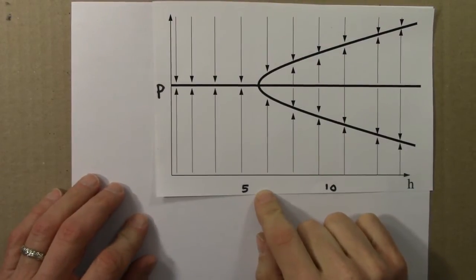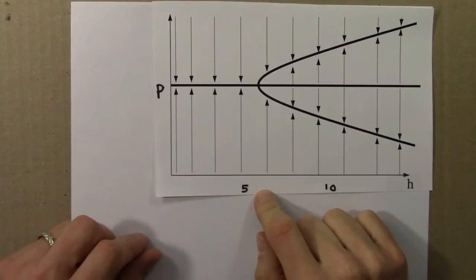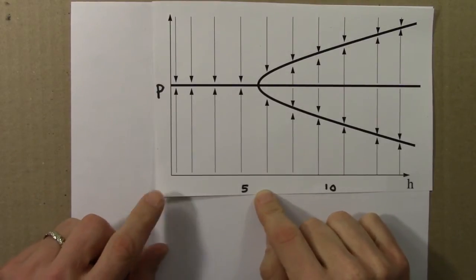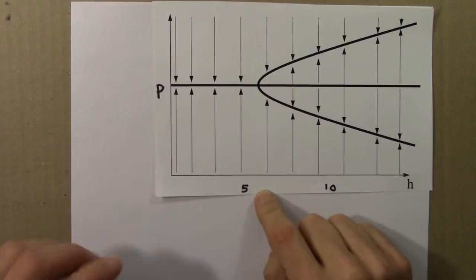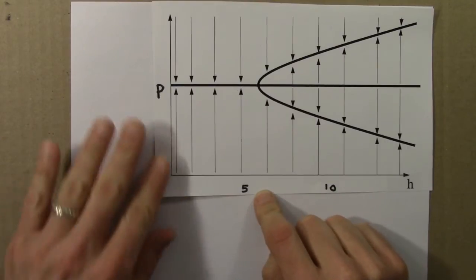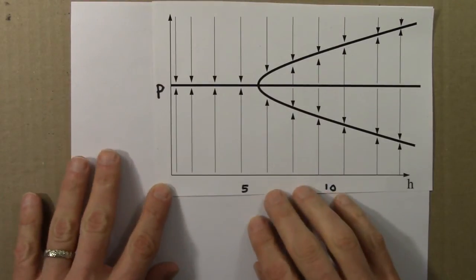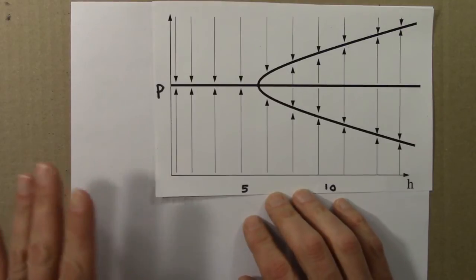Here's another bifurcation diagram. It's not for the logistic equation, but for a different differential equation. I won't go into the origins because the point of this exercise is just to get practice reading bifurcation diagrams.